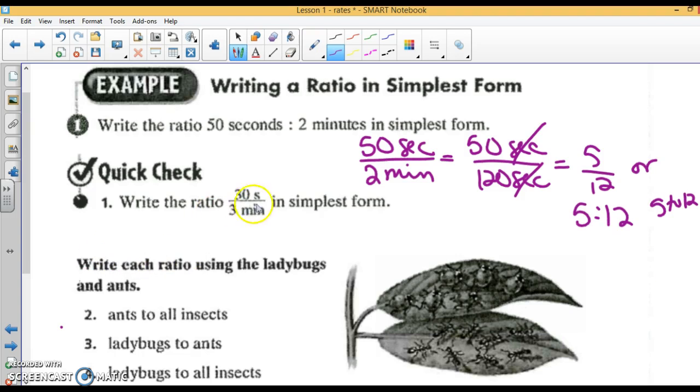Write the ratio 30 seconds to 3 minutes in the simplest form. So again, 30 seconds to 3 minutes - I'm going to multiply that by 60, that's 180 seconds. Seconds divided by seconds is gone. This will reduce to 1/6.